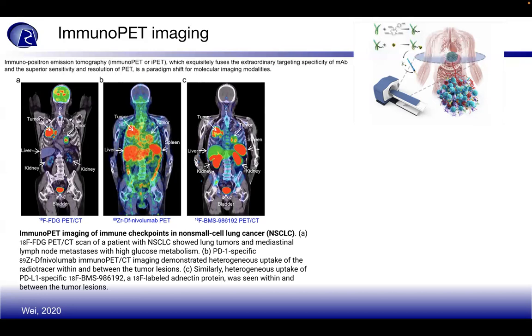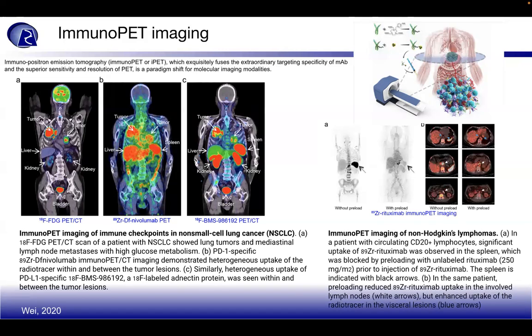With Zr-89 rituximab (Zr-RTX) immunoPET imaging in non-Hodgkin's lymphoma, a patient with circulating CD20-positive lymphocytes showed significant uptake of Zr-RTX in the spleen, which was blocked by preloading with unlabeled RTX prior to injection. The spleen is indicated with black arrows. In the same patient preloaded with Zr-RTX, enhanced uptake of the radiotracer was seen within involved lymph nodes and visceral lesions.